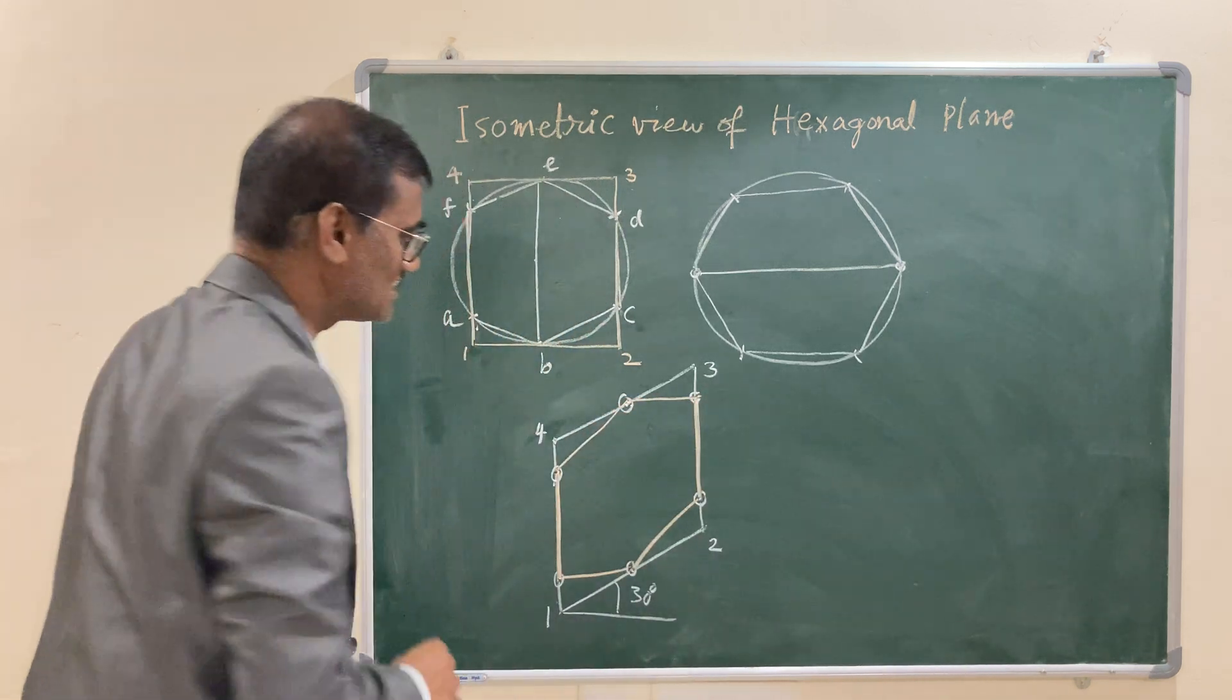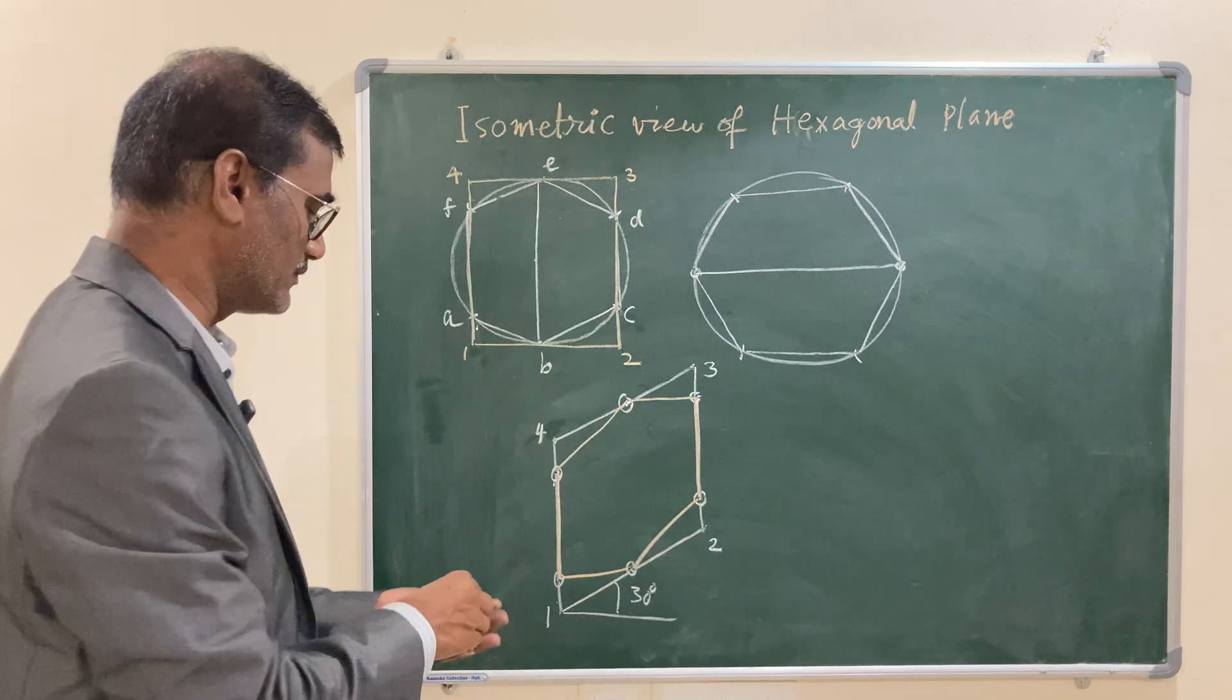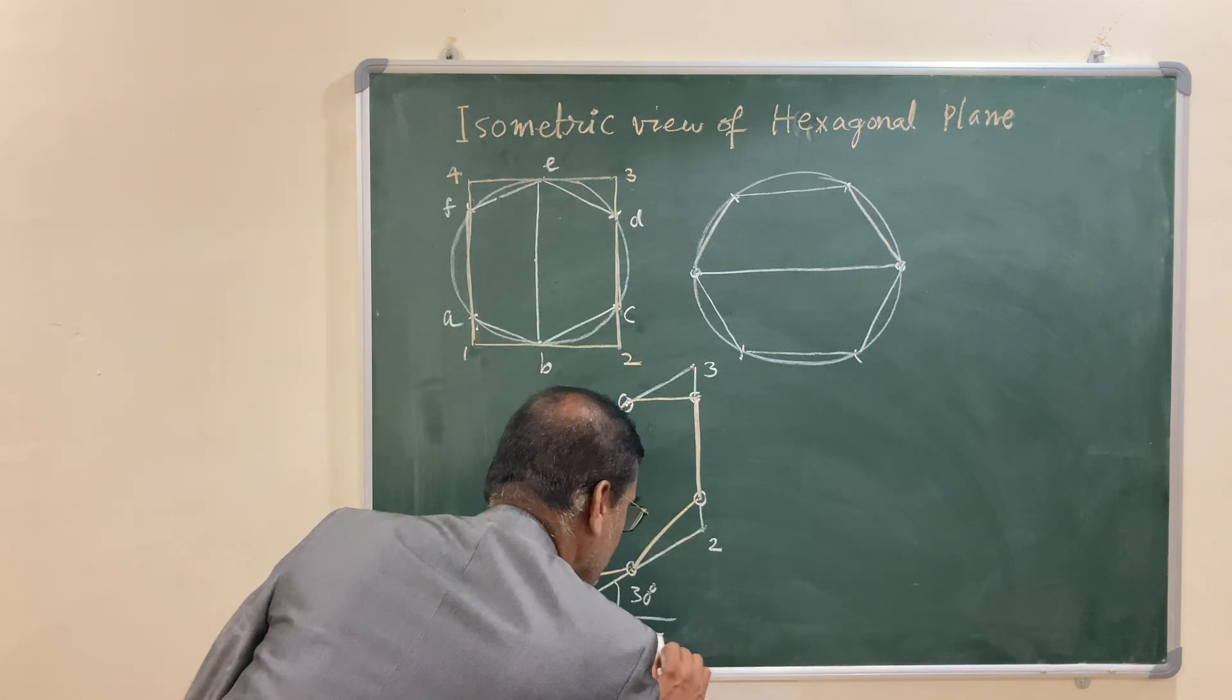You can see that certain edges are randomly changing the dimensions. So, this is in front view. If it is in front view, it is like this.